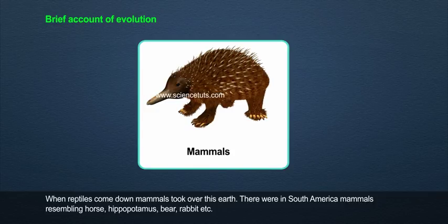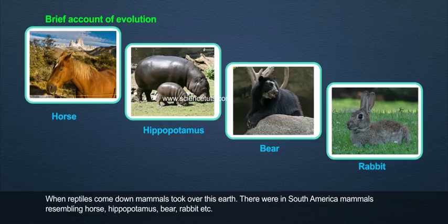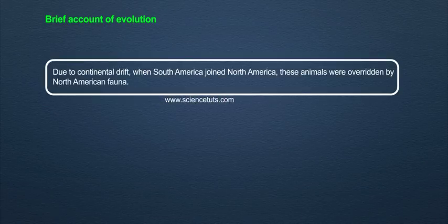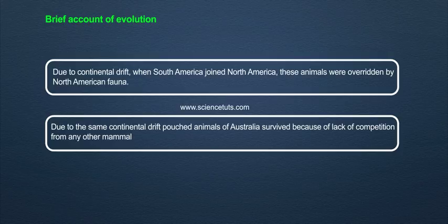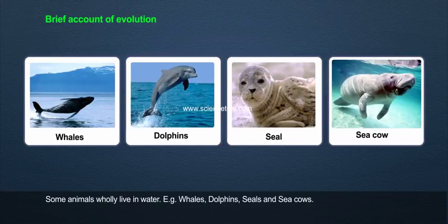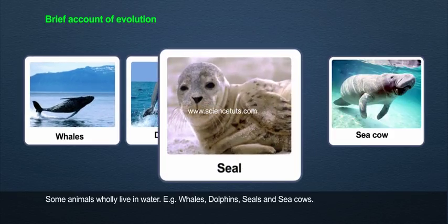When reptiles came down, mammals took over the Earth. In South America, there were mammals resembling the horse, hippopotamus, bear, and rabbit. Due to continental drift, when South America joined North America, these animals were overridden by North American fauna. Pouched animals of Australia survived because of lack of competition from other mammals. Some animals wholly live in water — examples include whales, dolphins, seals, and sea cows.